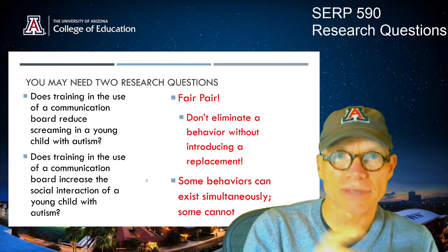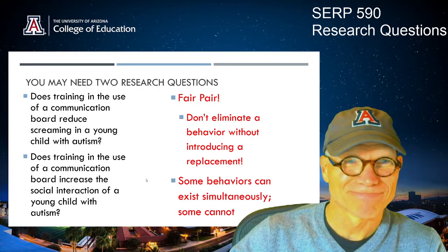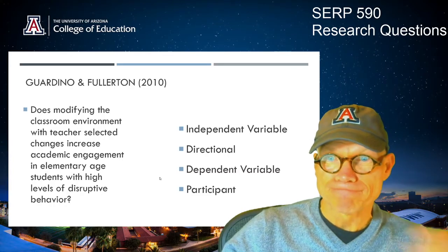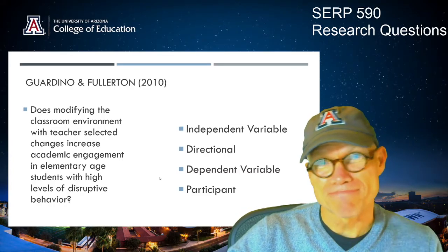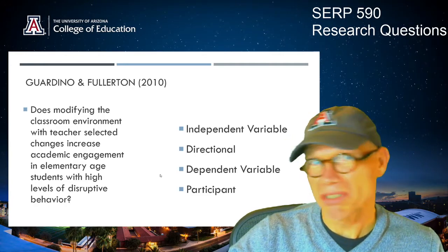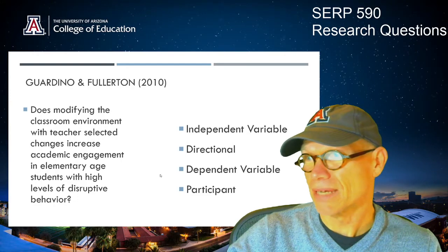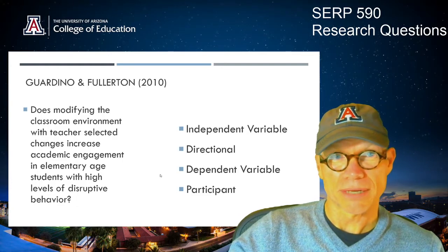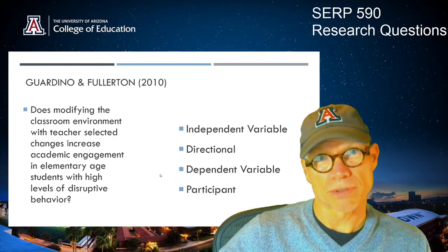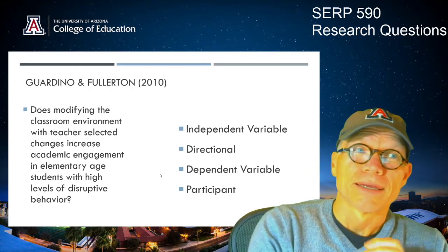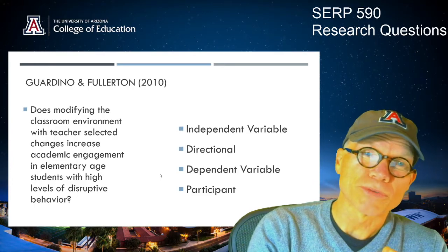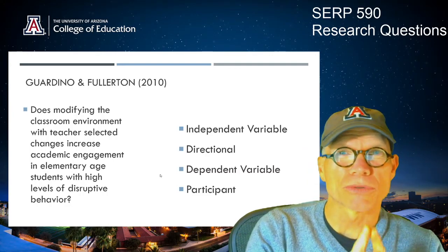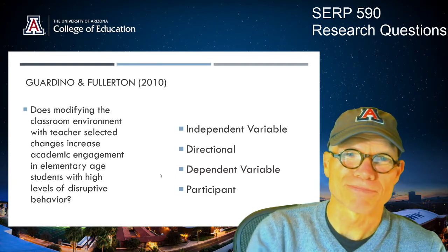If you have any questions about that, you can ask in the discussion section. So that's it — the simple recipe: your research question should have an independent variable which is the intervention, it should be directional, it should have a dependent variable, and it should have a brief participant description. Make sure you do the readings — they'll help give you more insights. I look forward to reading your posts in the discussion section, and we will get your research questions sorted out for the remainder of the semester. Bye-bye.